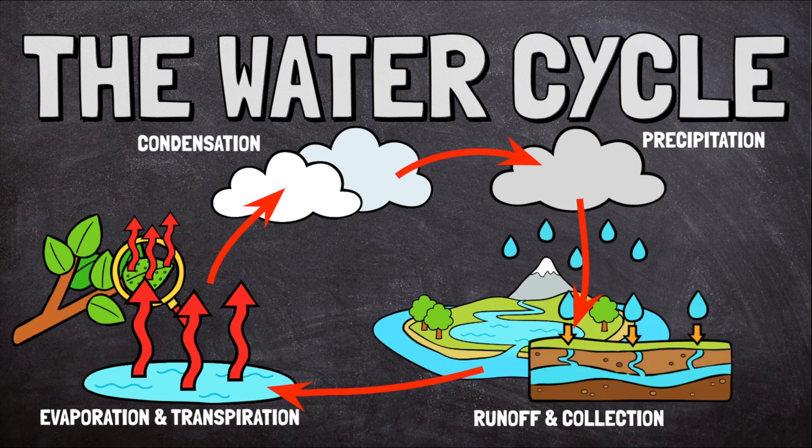This water will run into bodies of water and be reabsorbed by plants. In this way, we are constantly recycling Earth's precious water supply. Without it, nothing could survive.